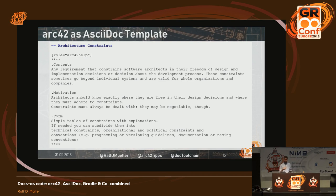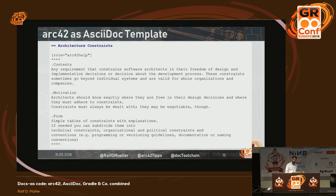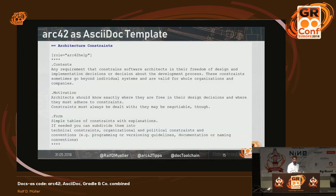If you leave out a chapter — for instance, runtime view is not often used — it makes sense to remove the help text and state that it was left empty by intention, rather than delete it fully. Otherwise you'd reorder chapters and lose the benefit of always knowing that, for instance, design decisions are in chapter 9.